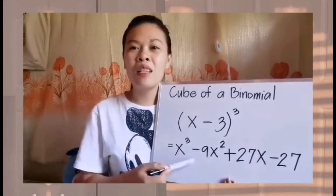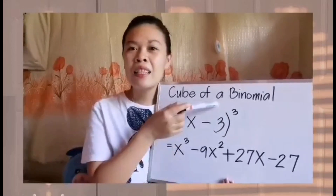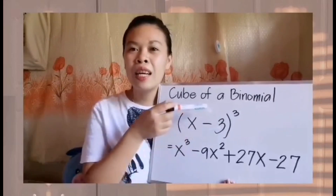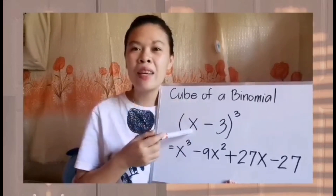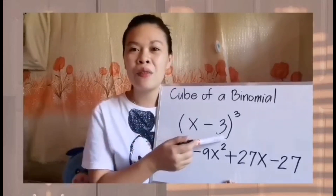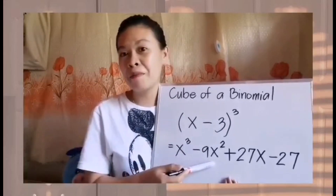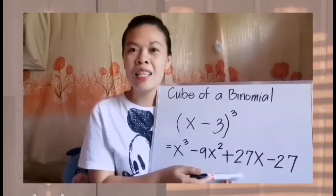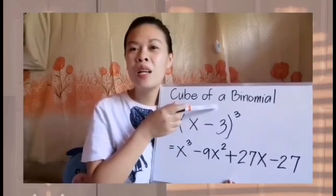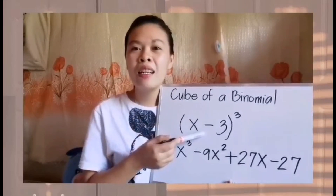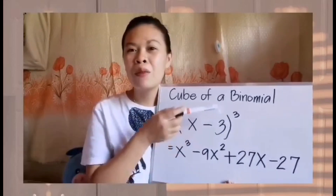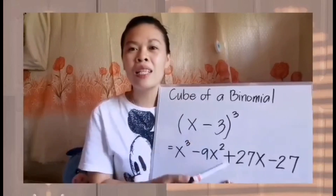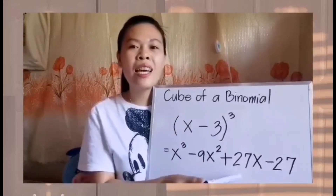Next, we have negative 9x squared for the second step. Get the product of the exponent, the square of the first term, and the second term. So that would be 3 times positive x times positive x times negative 3, which equals negative 9x squared. Next, we will have positive 27x. The step says we have to get the product of the exponent, the first term, and the square of the second term. To do that, we will have 3 times positive x times negative 3 times negative 3, which equals positive 27x.